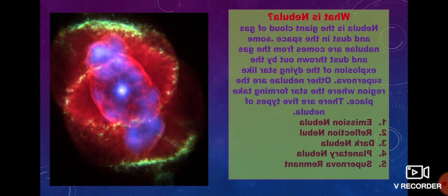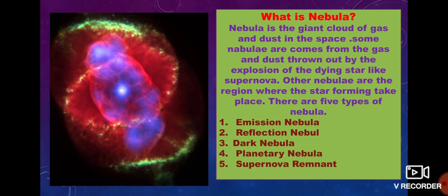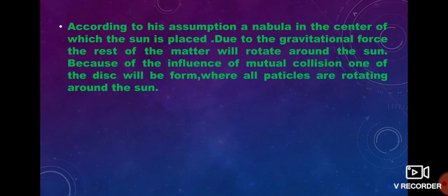What is a nebula? A nebula is a giant cloud of gas and dust in space. Some nebulae come from the gas and dust thrown out by the explosion of a dying star, like a supernova. Others are regions where star formation takes place. There are five types of nebulae: first, emission nebula; second, reflection nebula; third, dark nebula; fourth, planetary nebula; and fifth, supernova remnant.